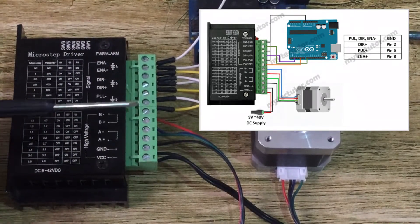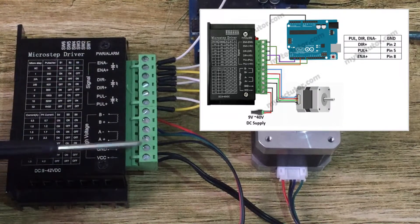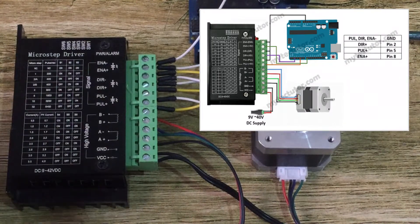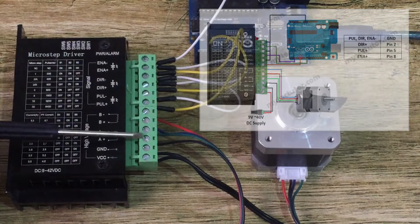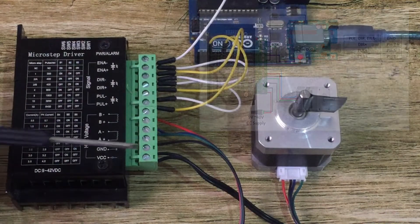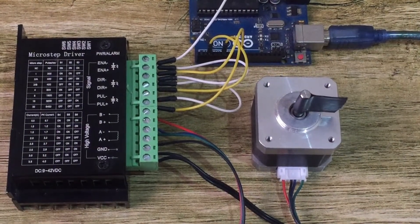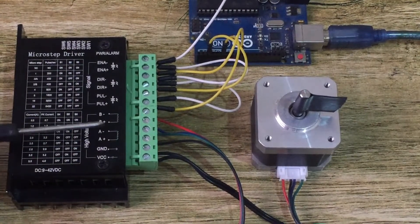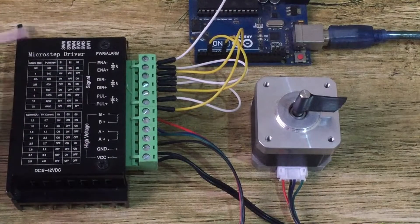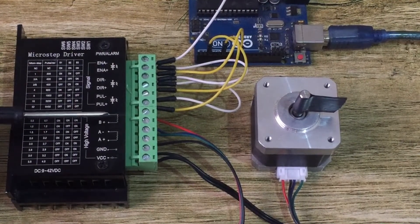The other half of the driver is where you connect the power supply and the stepper motor. Connect a DC voltage from 9 to 42 volts — in this case I'm using 12 volts. The four terminals are for connecting the coils of the bipolar stepper motor: the first pair of coils connects to A+ and A−, and the second pair connects to B+ and B−.